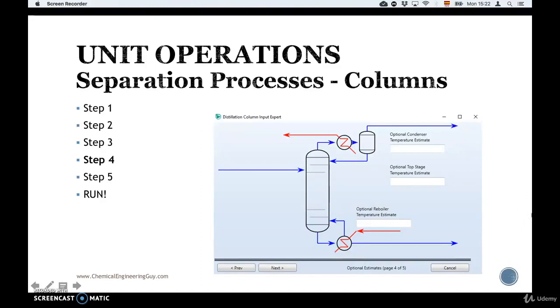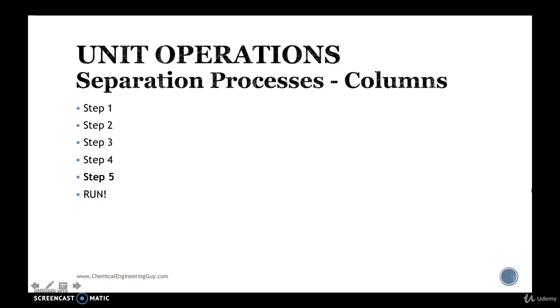And finally, we got step number five right here. It's not present, but it will be very similar. You will have the column and you need to state the distillate ratios and flow rate reflux. So you need to state the reflux, typically either molar or mass, and the total flow rate for the distillate right here.